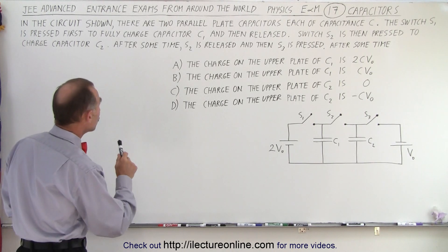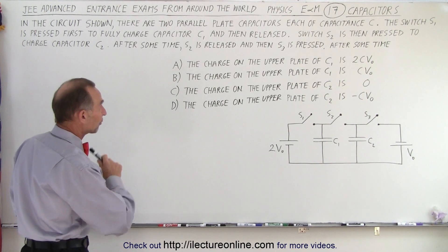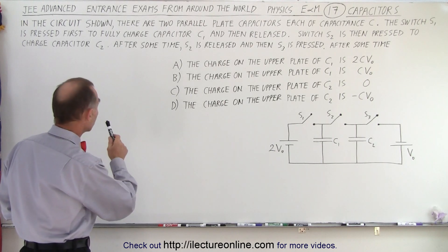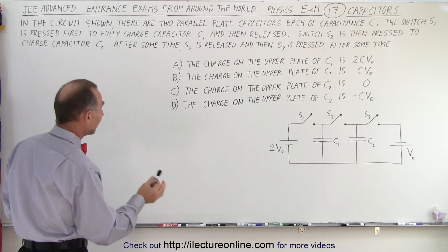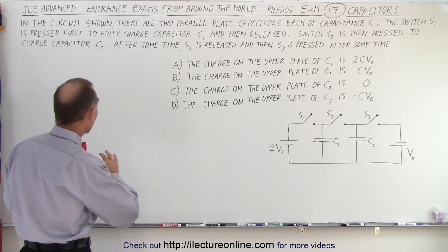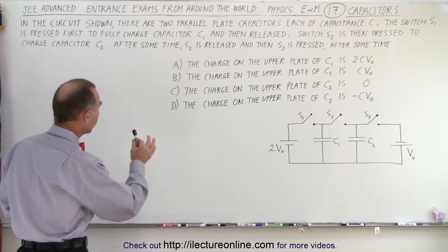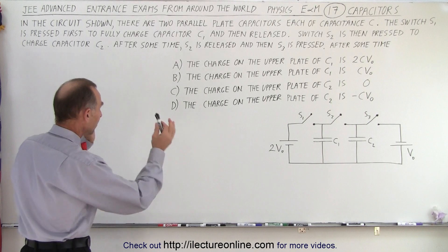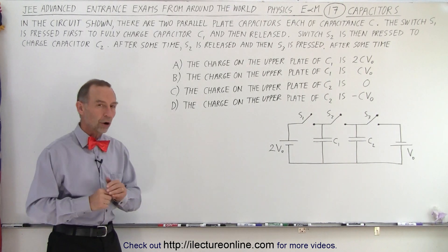In the circuit shown there are two parallel plate capacitors, each of capacitance C. The switch S1 is pressed first to fully charge capacitor C1 and then released. Switch S2 is then pressed to charge capacitor C2. After some time S2 is released and then S3 is pressed. After some time, which of those answers are correct?